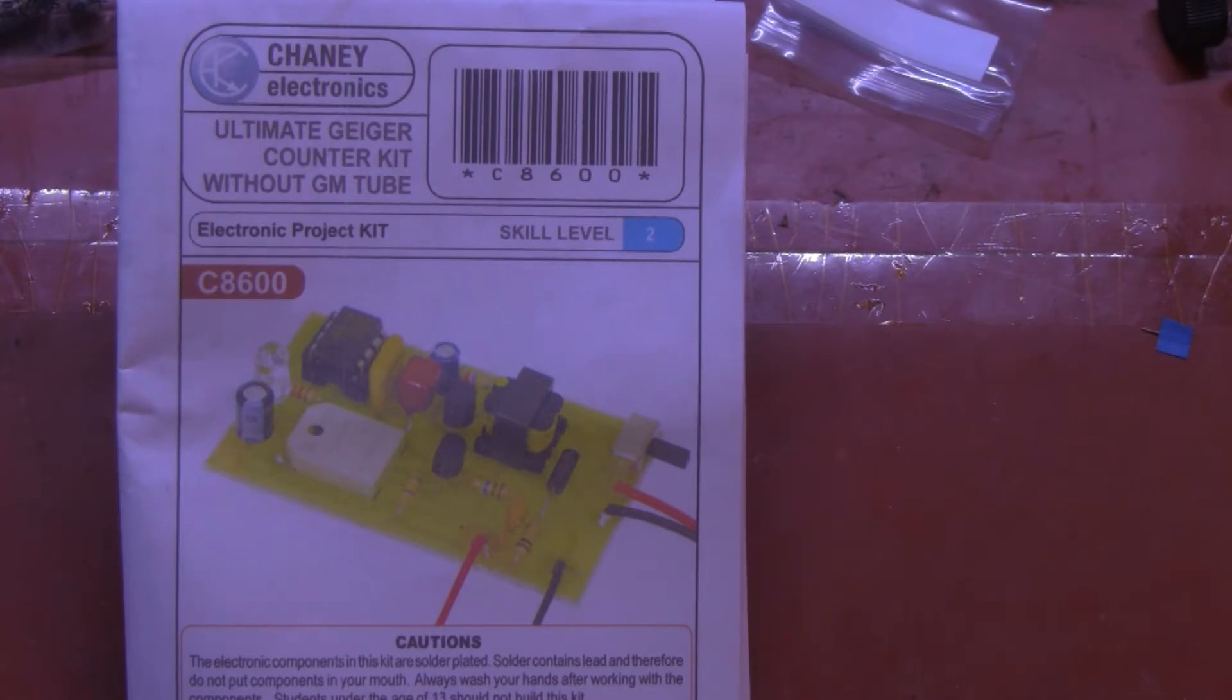It's not a counter. This is a small kit made by Cheney called the C8600, and it is a simple step-up voltage circuit and a little audio amplifier. It runs on a nine volt battery and works with a number of miniature Geiger counter tubes.